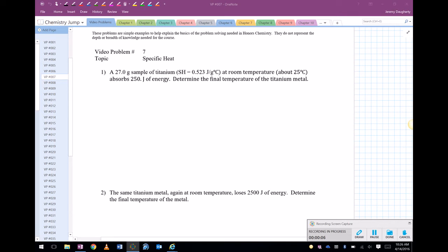A 27 gram sample of titanium, so there's your mass, has a specific heat capacity of the titanium. And it's at room temperature, so the temperature initial is 25 degrees Celsius. It absorbs 250 joules of energy, so q is equal to positive 250 joules. Determine the final temperature of the titanium metal, so T final.